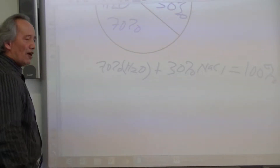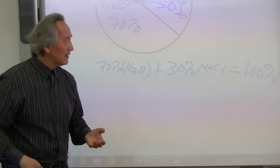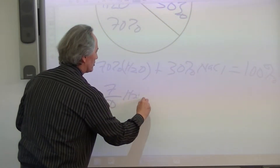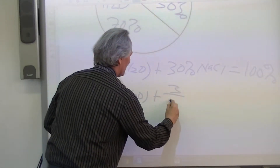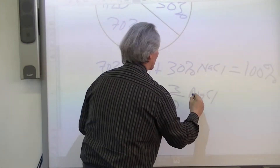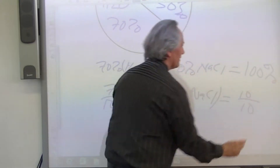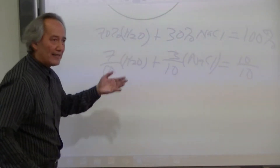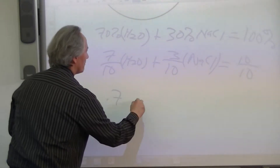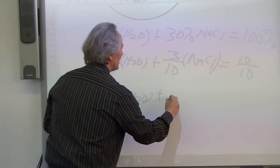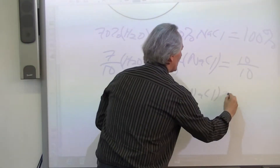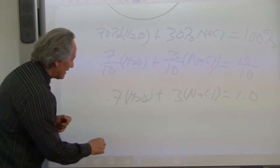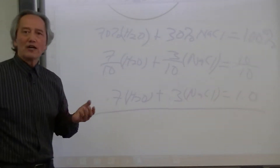How else might we interpret it? We can interpret it in terms of fractions: 70% of the water can be interpreted as 7 tenths, plus 3 tenths for the NaCl, giving us a total of 10 tenths. A third way is in decimal format: 0.7 H2O plus 0.3 NaCl equals 1.0. Another way to interpret that pie chart.